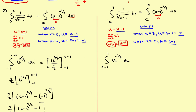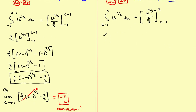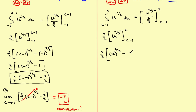The only difference from Part 1 is the limits. Finding the antiderivative: u to the two-thirds divided by two-thirds, giving three-halves times u to the two-thirds, evaluated from C minus 1 to 2. Plugging in: this equals three-halves times [2 to the two-thirds minus (C minus 1) to the two-thirds].